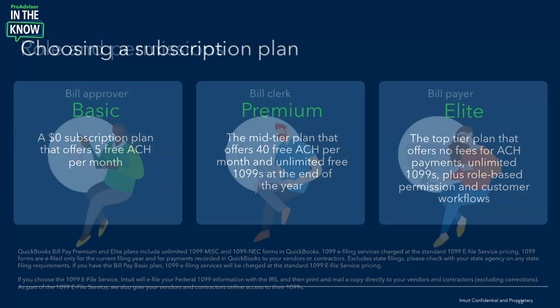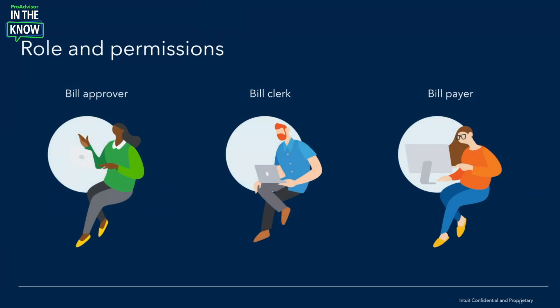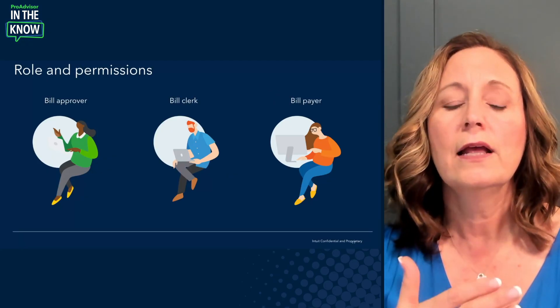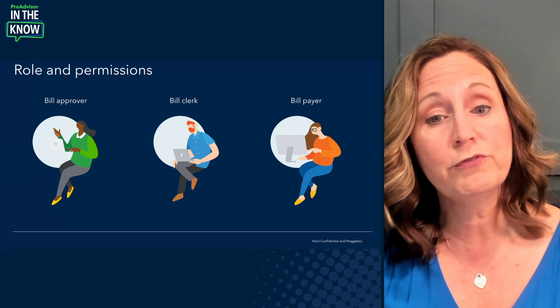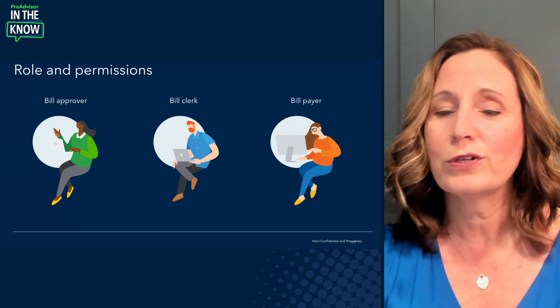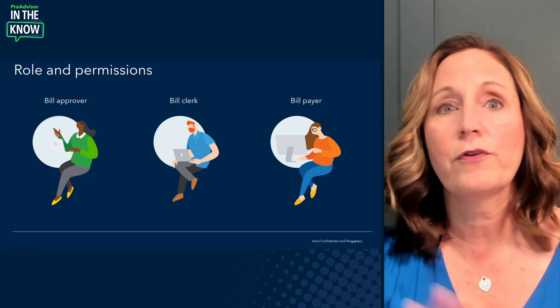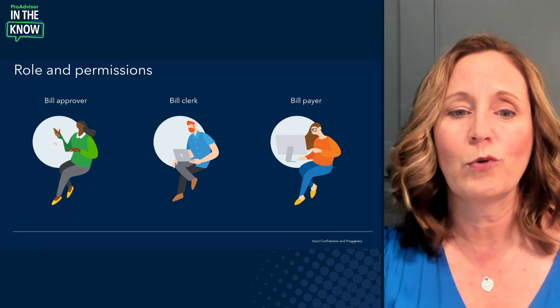Let's look at a few features in more detail. For clients on the Bill Pay Elite subscription, there are bill-specific roles for their team. These roles allow clients to set permissions controlling who can create, edit, approve, and pay bills — critical when we're sending money out of an organization. The first role is the bill approver: they can approve bills but are not able to pay them or take any other action. That's perfect for nonprofits where a board member just needs to approve.